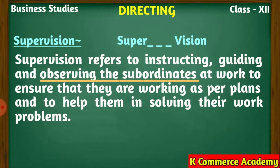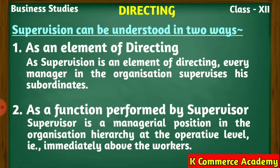In simple words, supervision means observing the workers while they are working, and in case they are making any mistake, to guide them. Supervision can be understood in two ways. First, as one of the elements of directing — it has to be performed by each and every manager concerning their respective subordinates. Every manager has to supervise and observe their subordinates. As an element of directing, supervision is a function that has to be performed by each and every manager in the organization.